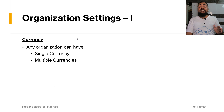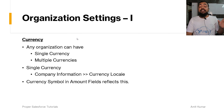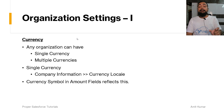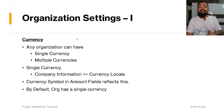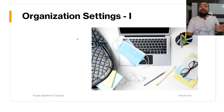An organization can have single currency or multiple currencies. In this video we are only going to talk about single currency. For single currency, users can select the currency from the Company Information page using the currency locale. The currency symbol in amount fields reflects this currency locale — whatever currency locale is selected will be reflected on the amount fields. By default, an org has a single currency, and the org's default currency only affects the currency symbol, not the amount value.